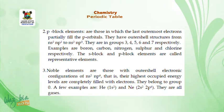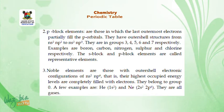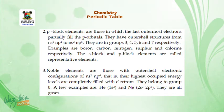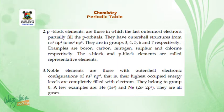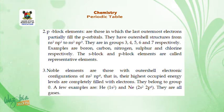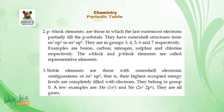Number 3 is the noble elements. These are elements with outer shell electronic configurations of NS2NP6; that is, their highest occupied energy levels are completely filled with electrons. They belong to group 0. A few examples are helium, with the configuration 1S2, and neon, with the outer configuration of 2S2, 2P6. They are all gases.